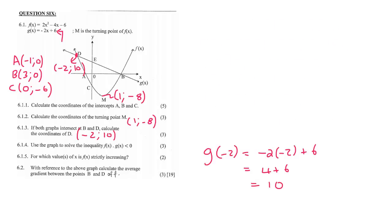6.1.4: Use the graph to solve the inequality f of x multiplied by g of x is smaller than 0. Let me help you understand this. They're wanting you to multiply two things together and get a negative answer, because smaller than 0 means negative. So here's my question: How can you multiply two things together and get a negative? Either this one must be positive and this one negative, or this one negative and this one positive.